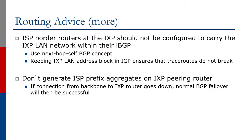The ISP border routers at the exchange point should not be configured to carry the exchange point LAN within the internal BGP. We have seen in the initial part of these presentations about the next-hop-self iBGP concept. It's important that this is used, and this means we don't need to carry the exchange point LAN around within our network. Keeping the exchange point LAN address block in the IGP, however, ensures that traceroutes across the exchange point do not break, and this may be useful for troubleshooting purposes.